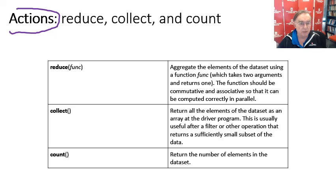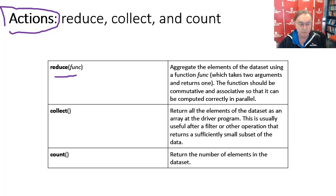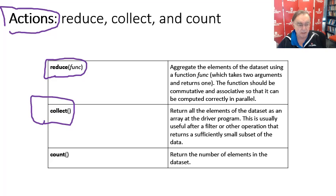Now we come to a set of actions: reduce, collect, and count. Reduction is a standard aggregation where you define a function — like the plus function — for taking averages, totals, or histograms. You can also do minimum, maximum, and multiply, but only if they have the commutative and associative property, since otherwise you can't compute them in parallel properly. Collect gathers the elements of a data set as an array at the driver program, and is most useful when you have a relatively small number of elements. Count we've seen many times with word count.